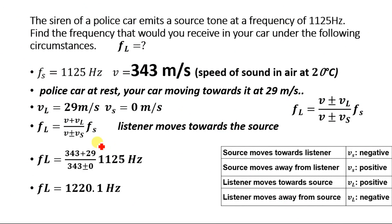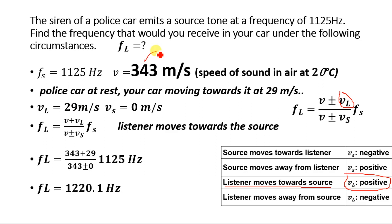For the second condition: the police car is at rest and your car is moving toward it at 29 meters per second. Here the listener moves toward the source, so VL will be positive. We have FL = (V + VL) / (V ± VS) × FS. V = 343 meters per second, and VL equals 29 meters per second since our car is approaching the police vehicle.